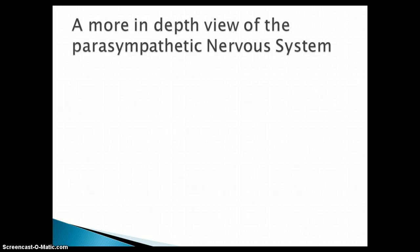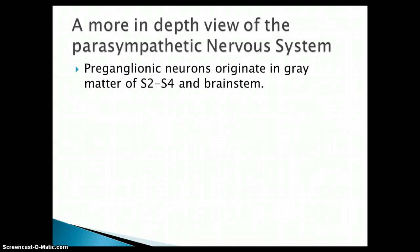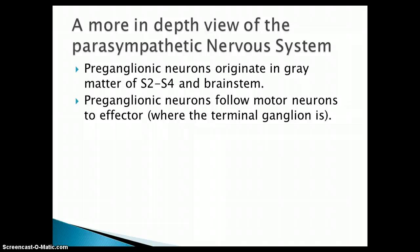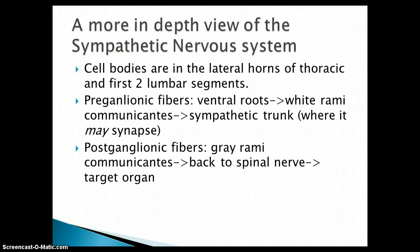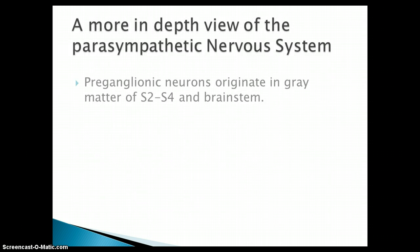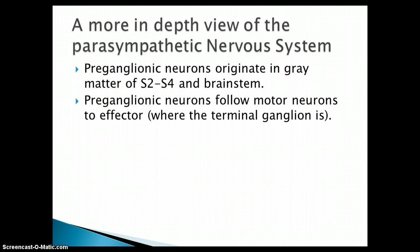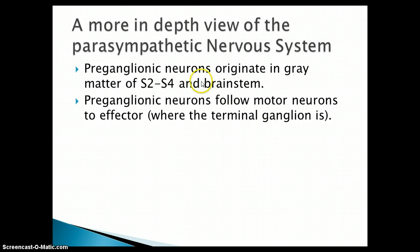Now let's talk about the parasympathetic nervous system in depth. The preganglionic neurons originate in the gray matter of your sacral regions, specifically S2 to S4, and also in the brainstem in cranial areas. The preganglionic neurons follow the motor neurons to the effector. Unlike in the sympathetic nervous system where the ganglia are in the sympathetic trunk, in the parasympathetic nervous system the terminal ganglion is actually near the effector organ.